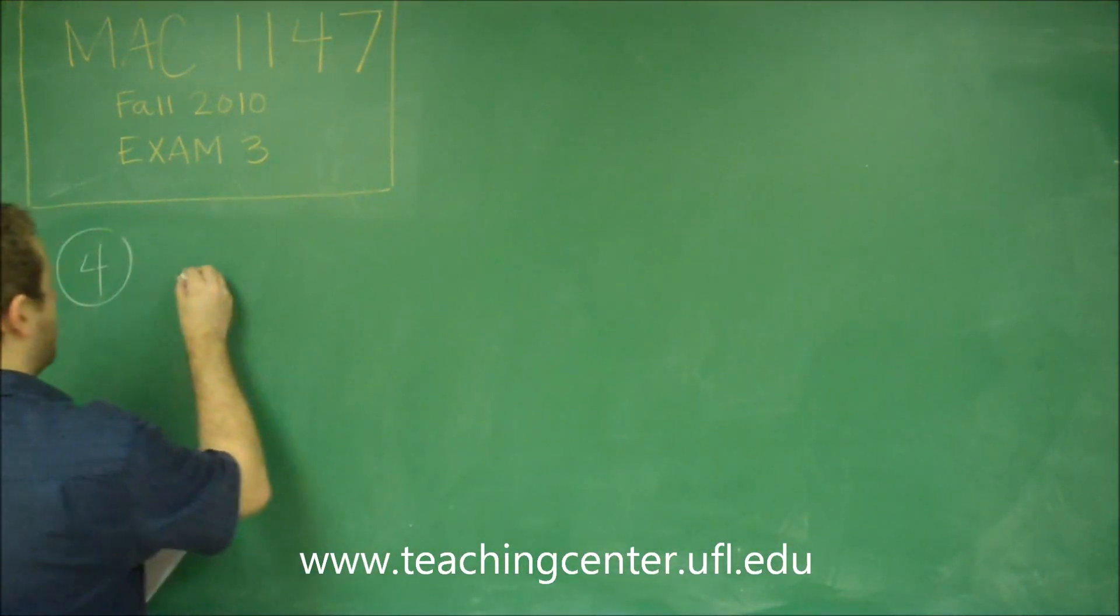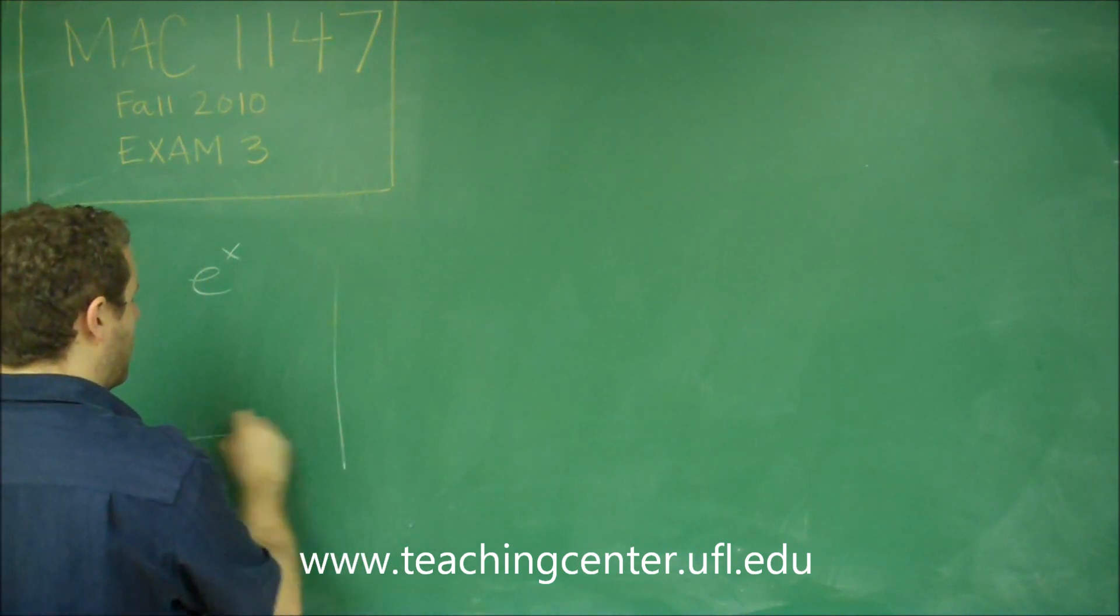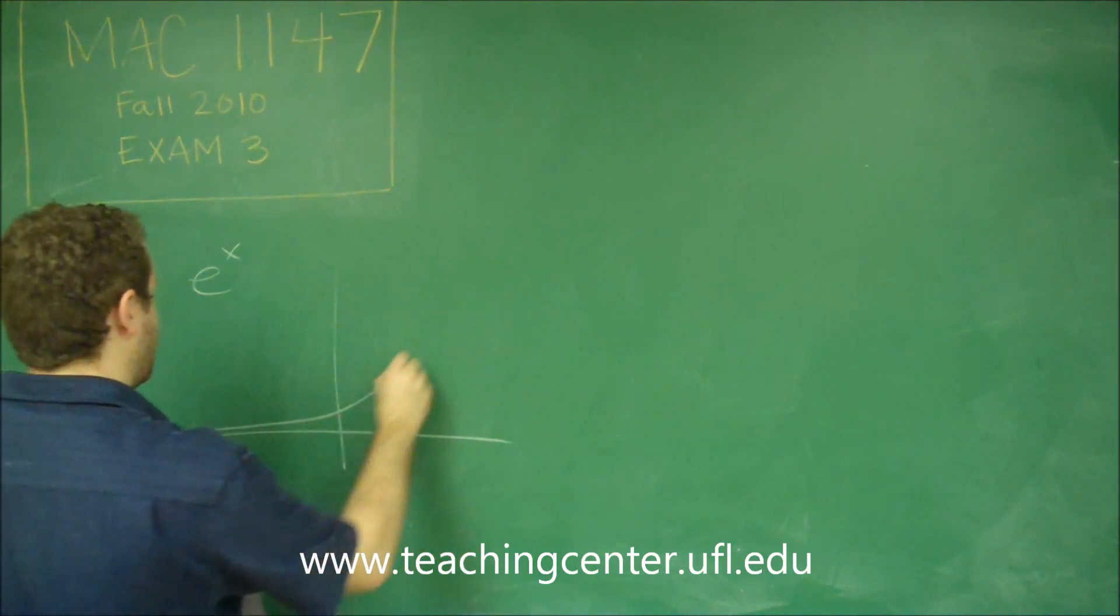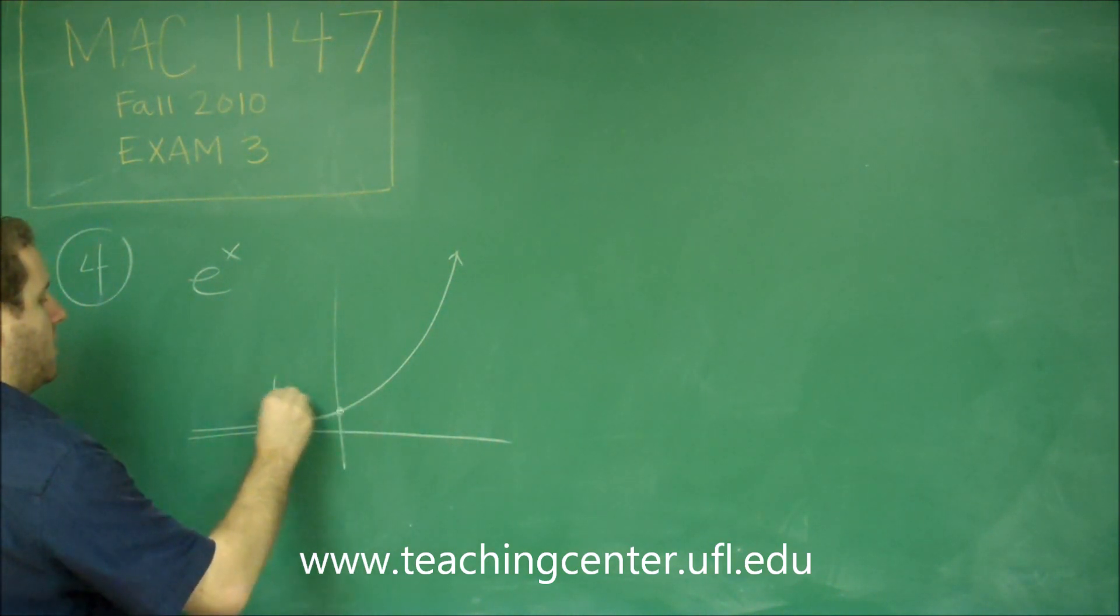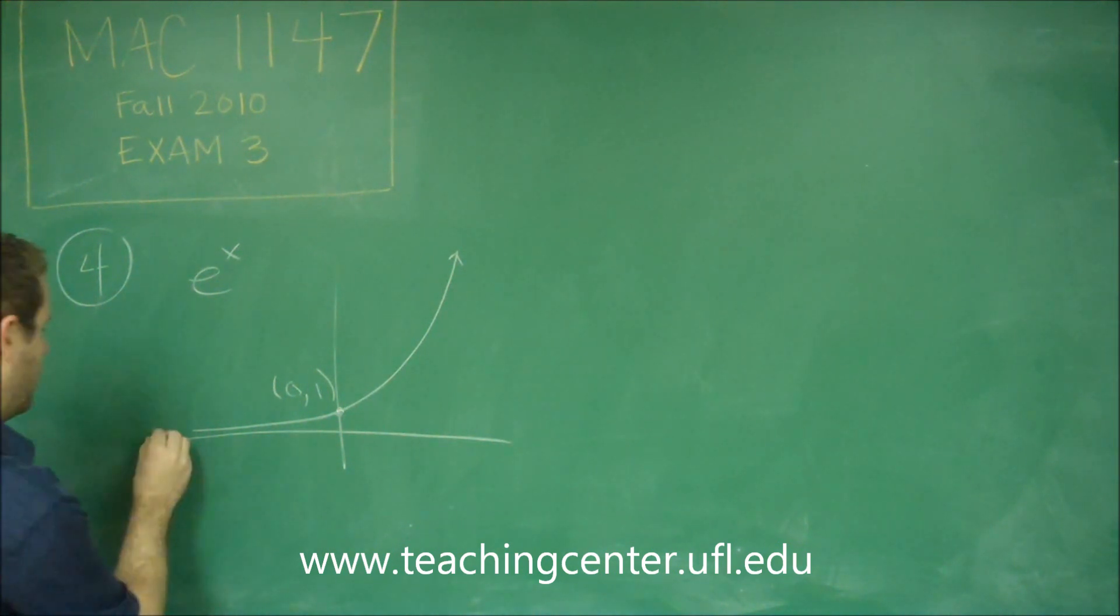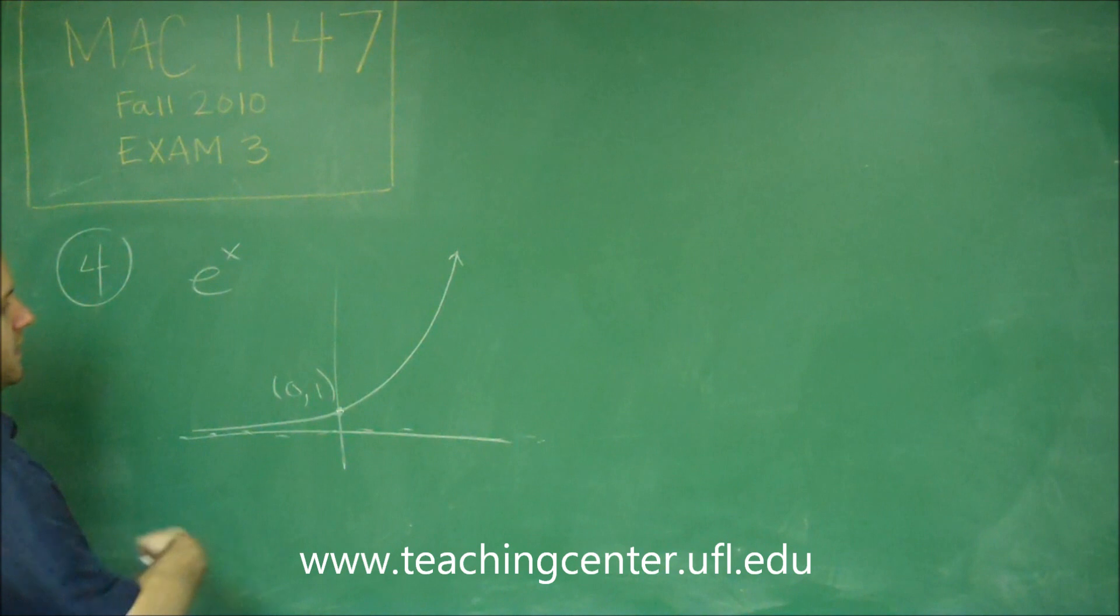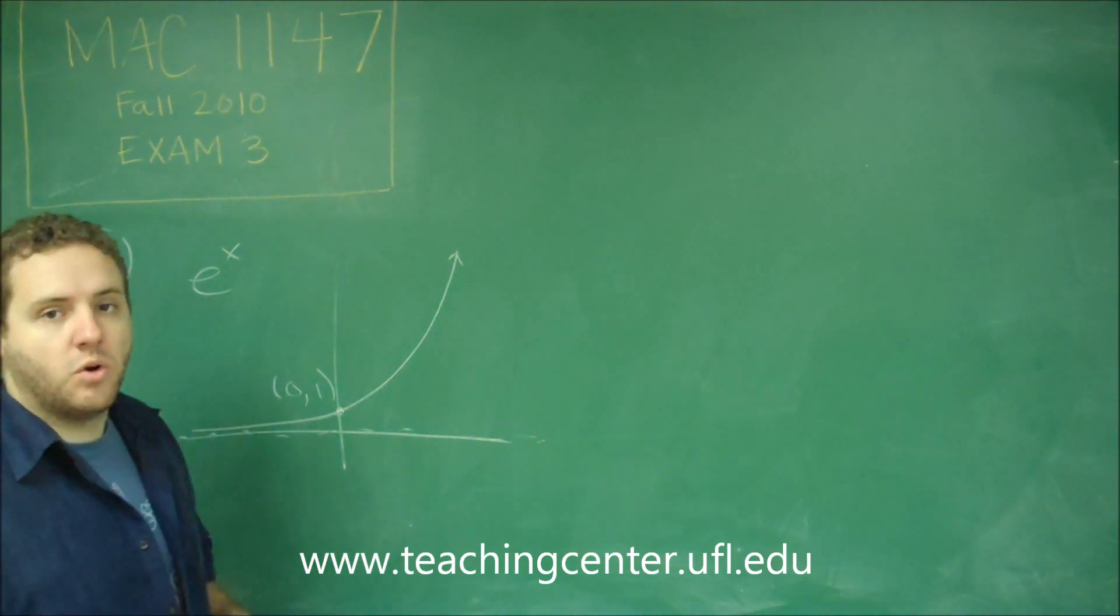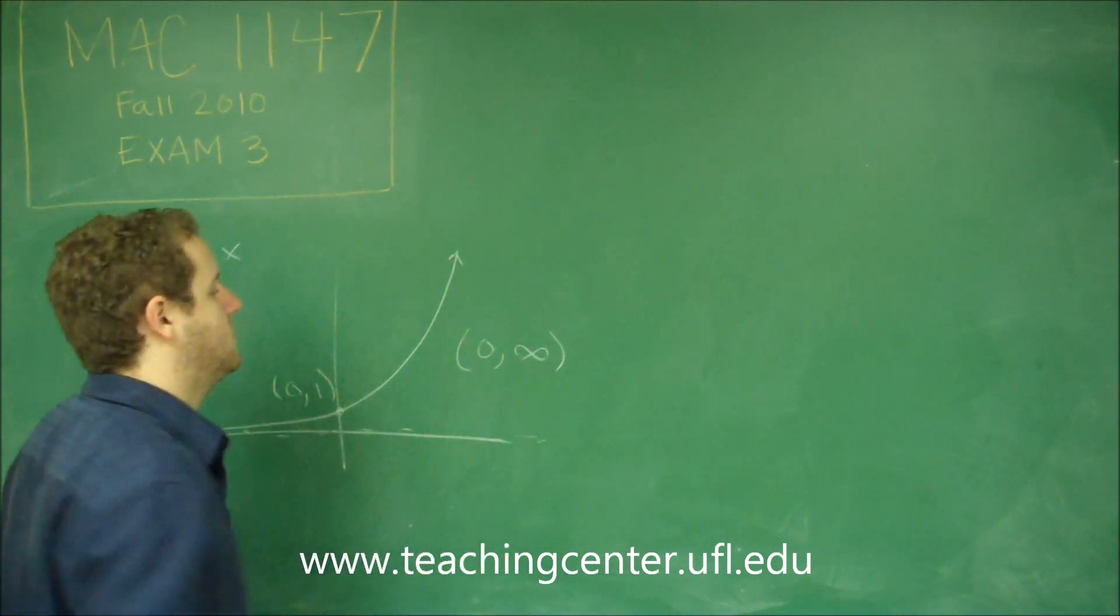So first of all, let's just think about a normal exponential function, e to the x. Remember that this function looks like that, where this is the point (0, 1). And you have a horizontal asymptote at y equals 0, increasing. The range of our normal exponential function is 0 to infinity.